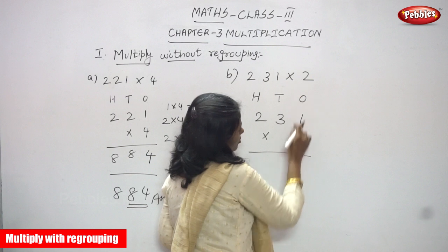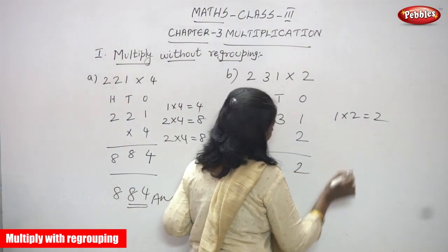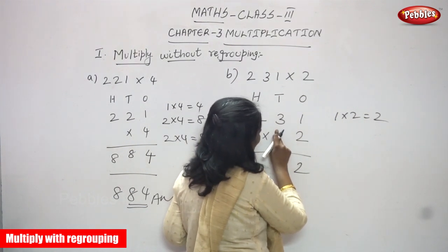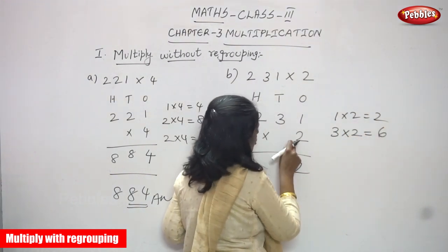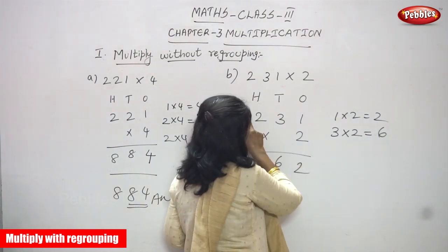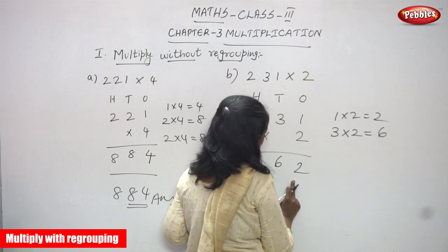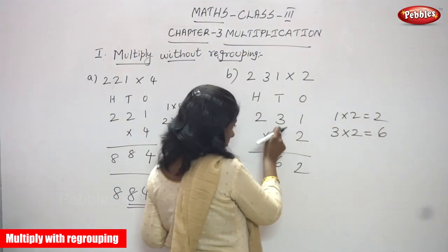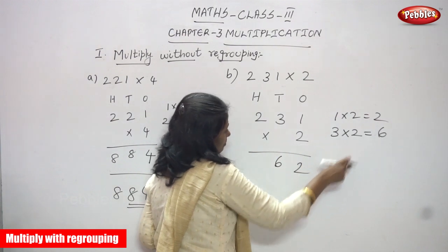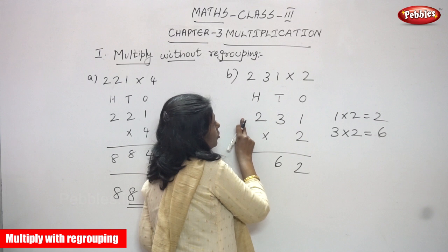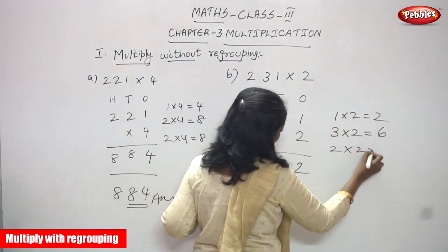Let's start the multiplication. First we start with the ones: one into two gives two, that means two ones. Next, three tens — three into two gives six, that is six tens. I've written six. Then the hundreds place: the number is two, so moving to the hundreds place, two into two gives four hundreds.